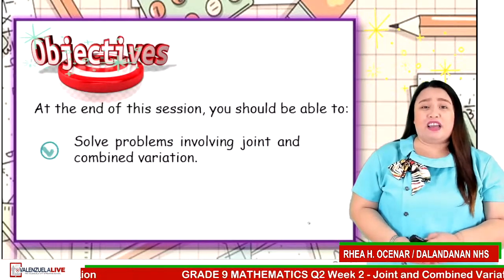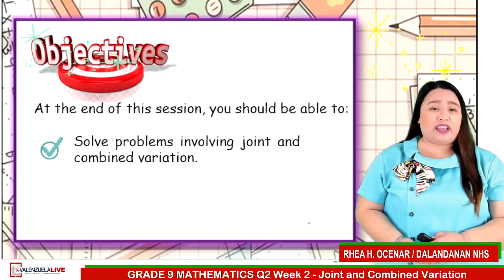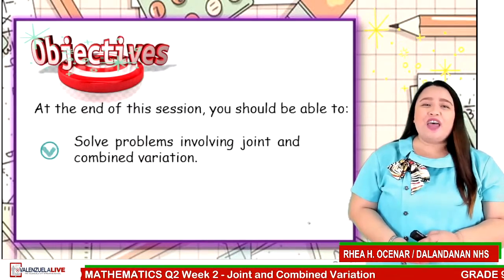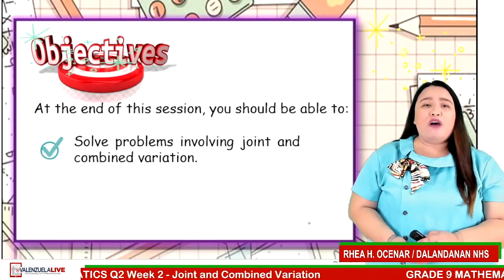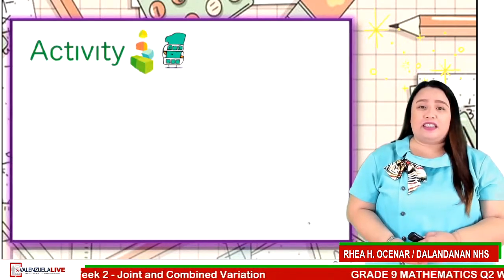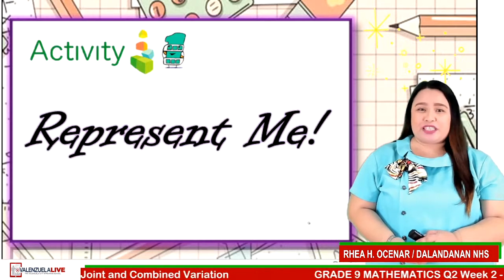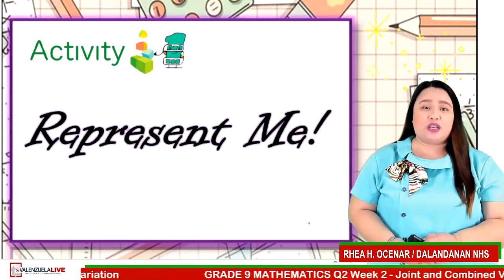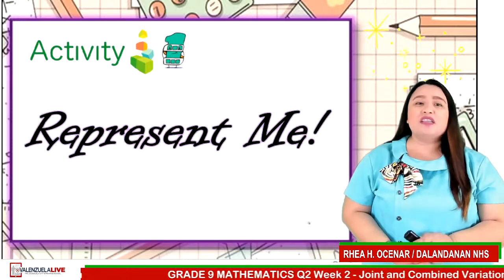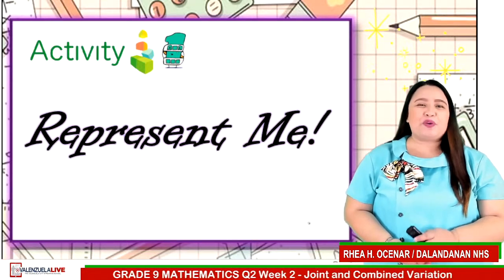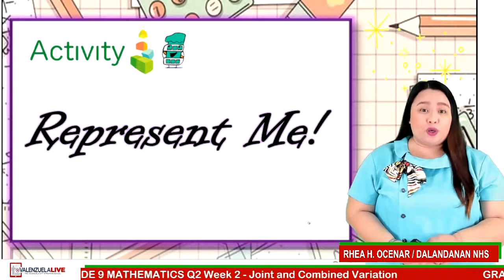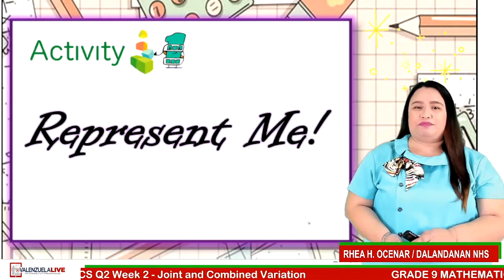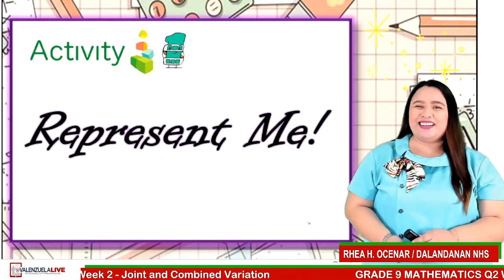Last live session, you learned about Direct and Inverse Variation. Let us check if you really understood the said lesson. Our first activity is entitled Represent Me. You will translate the statement that will flash on your screen. You will be given 5 seconds to answer. You can type your answer in the chat box. Use variable k to represent the constant of variation. Are you ready? Let us begin.